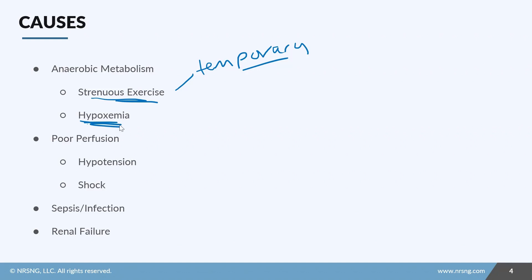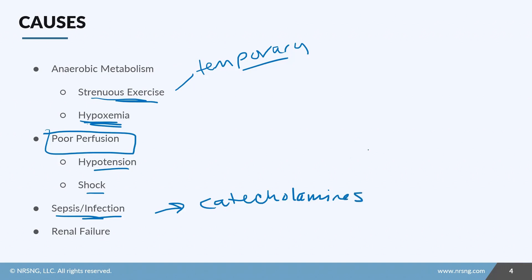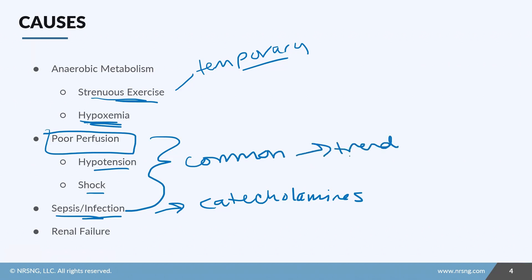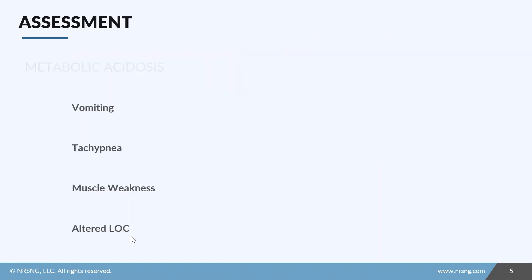Another cause of lactic acid buildup is any state of poor perfusion to the tissues. The best examples are severe hypotension and shock states — we may have plenty of oxygen but we're not delivering it to the tissues. We also see an increase in lactic acid in sepsis or severe infection, related to catecholamine release as the body fights infection. Poor perfusion and sepsis are the most common causes, and lactic acid evaluation is part of most sepsis bundles and the Surviving Sepsis Campaign guidelines. Levels can also be elevated in renal failure since the kidneys help excrete lactic acid.